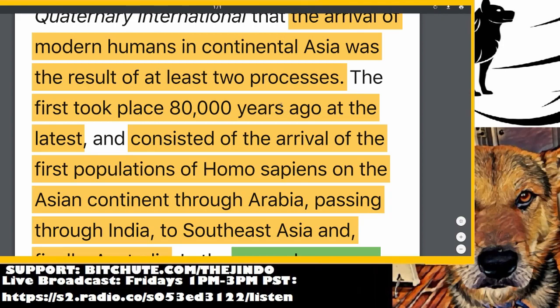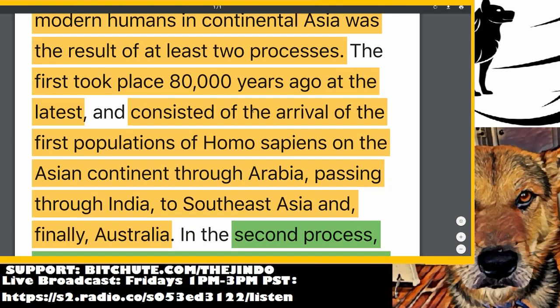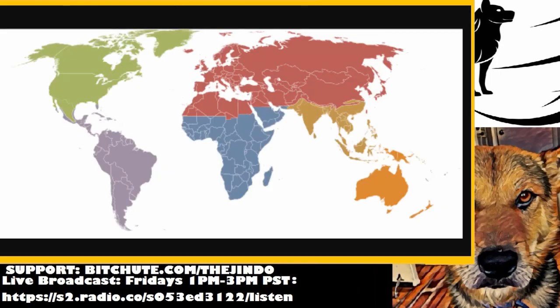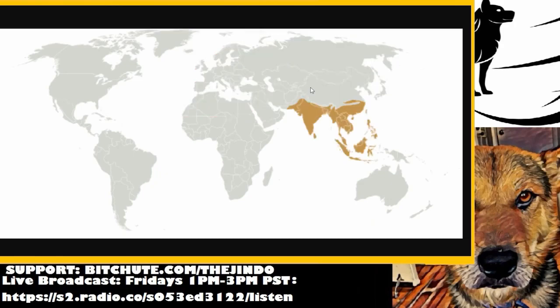Continental Asia — modern Asians — was the result of at least two processes. The first took place 80,000 years ago at the latest and consisted of the arrival of the first populations of Homo sapiens on the Asian continent through Arabia, passing through India to Southeast Asia, and finally Australia. This is all theoretical. What they described here is essentially the Oriental zone, circa 80,000 years ago.